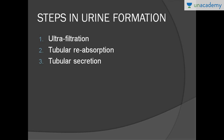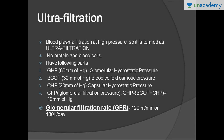Ultra-filtration takes place in the glomeruli and the Bowman's capsule. In this process, blood is filtered and the glomerular filtrate is formed. The blood is filtered at high pressure, which is why we call it ultra-filtration. Another reason is that proteins and blood cells do not pass through this membrane.